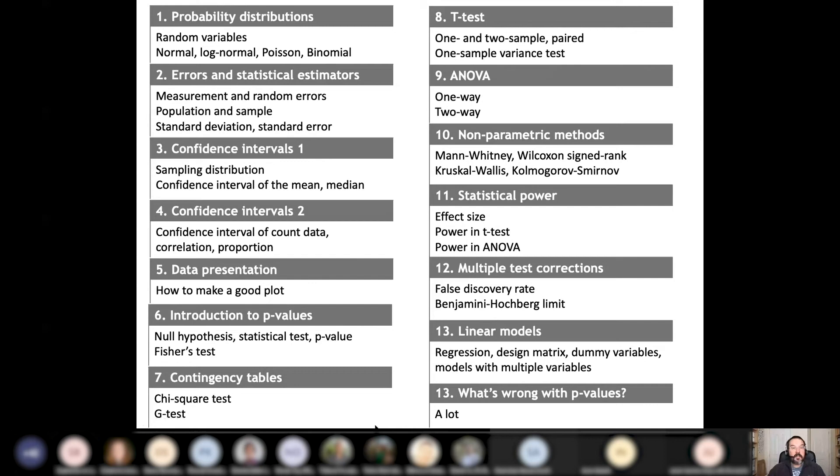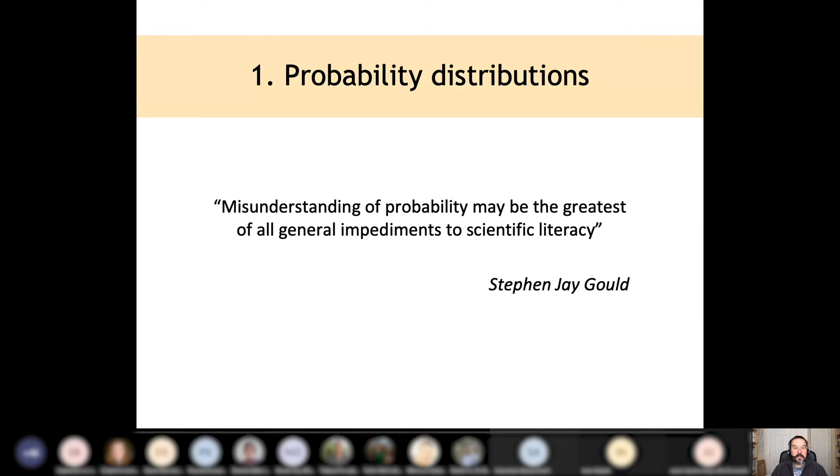The first few, the first four lectures will focus on uncertainties and error analysis in biology. Then I will tell you something about how to make a good plot about data presentation. And the rest is broadly covering statistical testing, various types of tests like T-test or ANOVA and other tests. I will also talk about statistical power, which is an important topic, and multiple test corrections, which are often forgotten. And then end with linear models and a closing lecture about what's wrong with p-values.